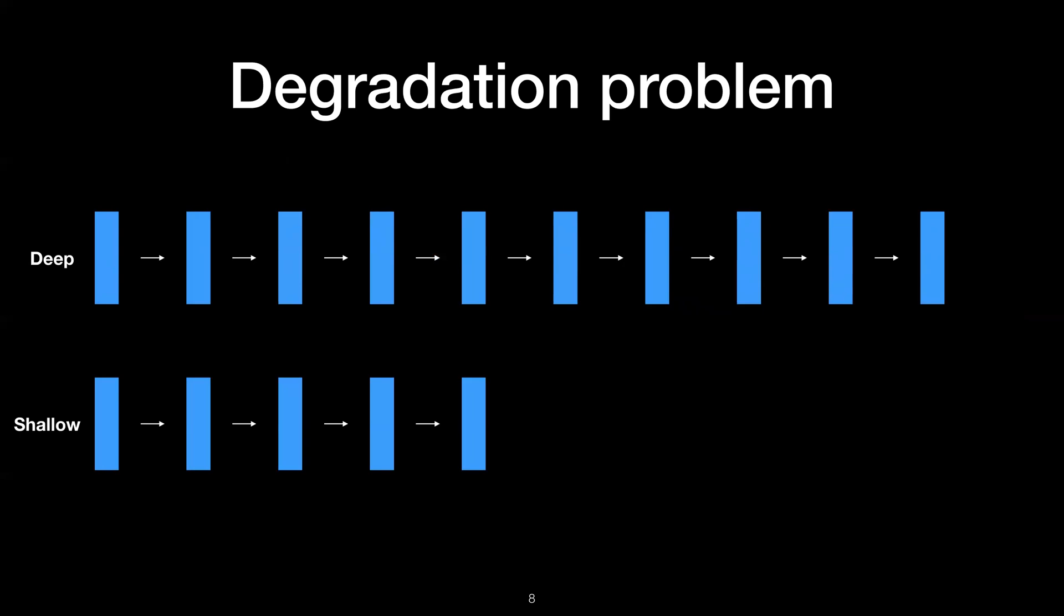However, without thinking about optimization, but purely from the model's capacity perspective, this phenomenon is counterintuitive because the deeper network should have less training error than the shallower network. This is because we can argue that the deeper network can mimic the shallower network by learning the identity connections. For example, in this diagram, if we make these layers learn the identity, then the deeper network can precisely mimic the shallower network. However, as shown by the previous experiments, our usual optimization techniques have difficulties in approximating these identity mappings. For the models to learn identity mappings is quite hard.